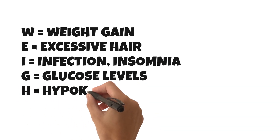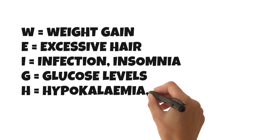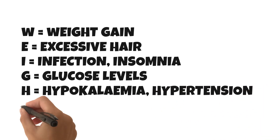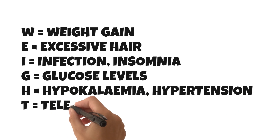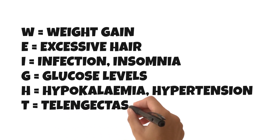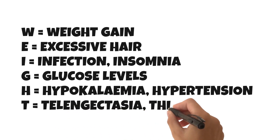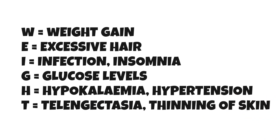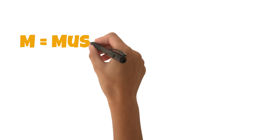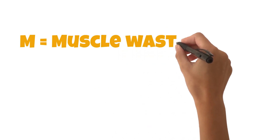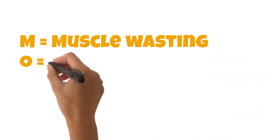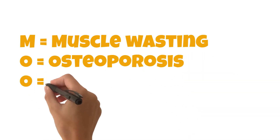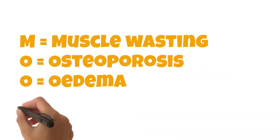G — glucose levels are high, which can predispose patients to diabetes. They can also get hypokalemia and have a risk of hypertension. They can develop telangiectasias or thinning of the skin, and they can get muscle wasting around the arms. There is also an increased risk of osteoporosis, and they can get edema.